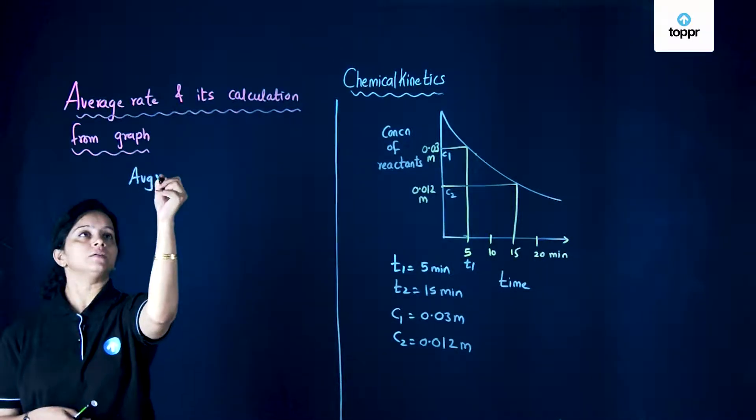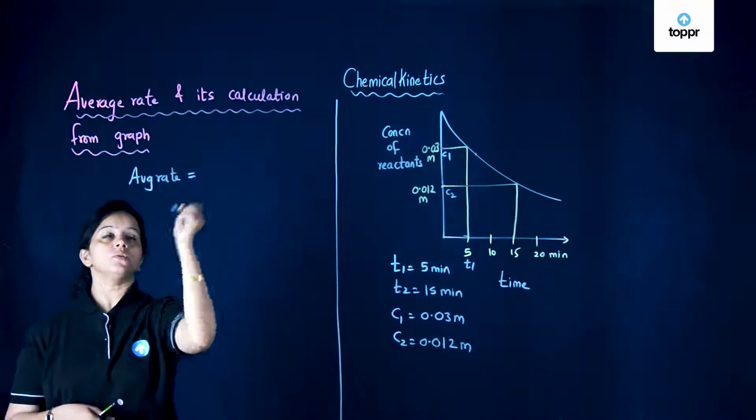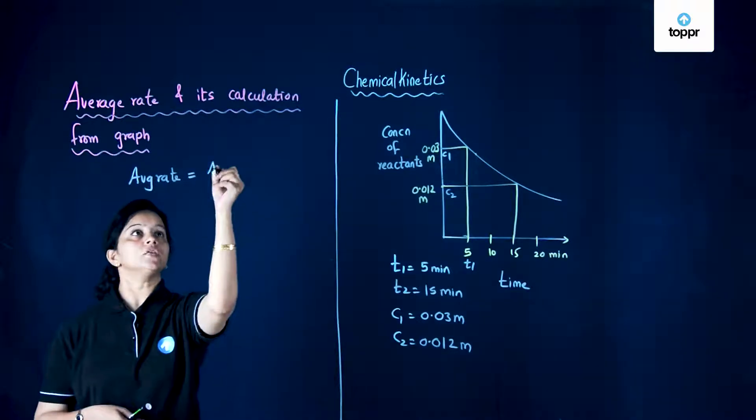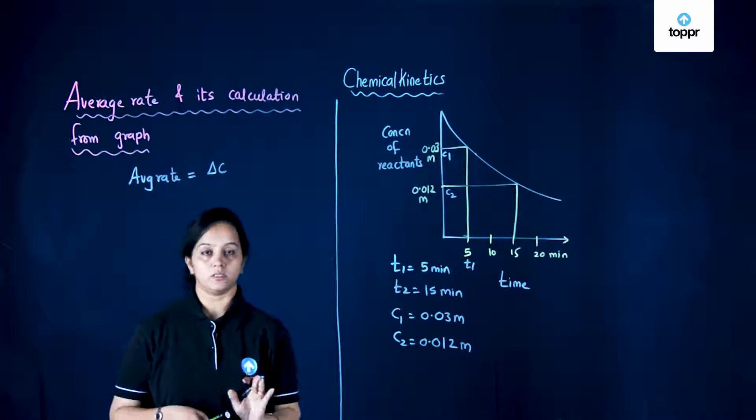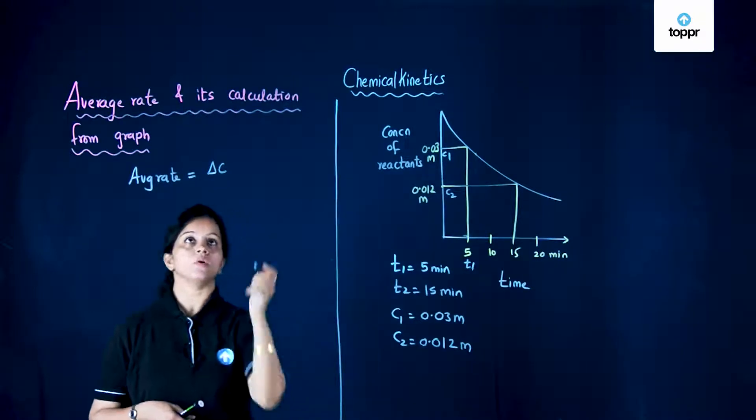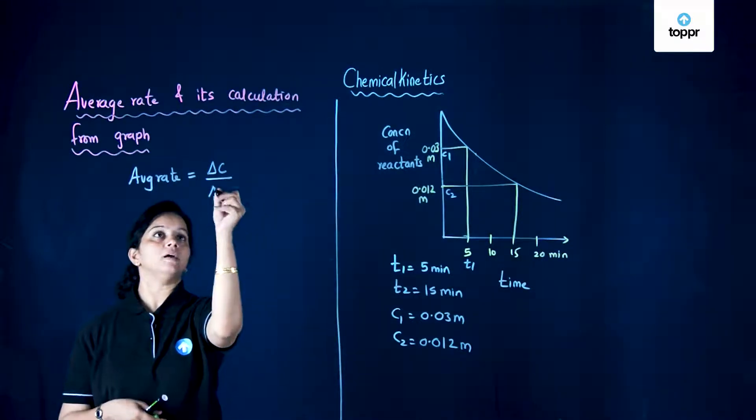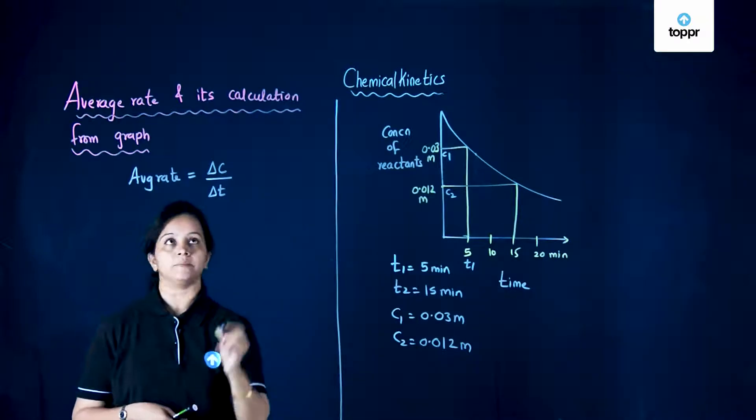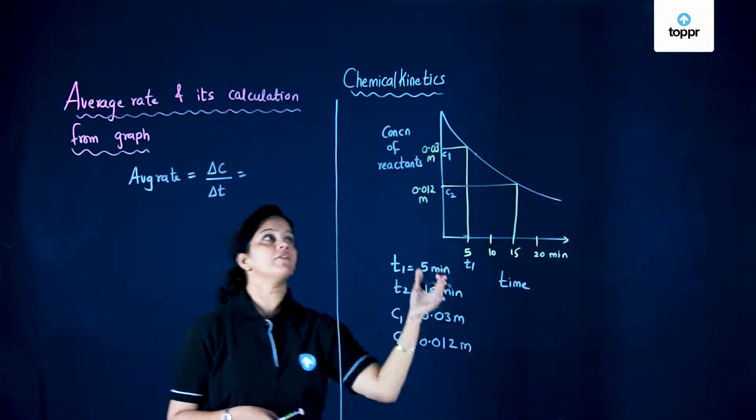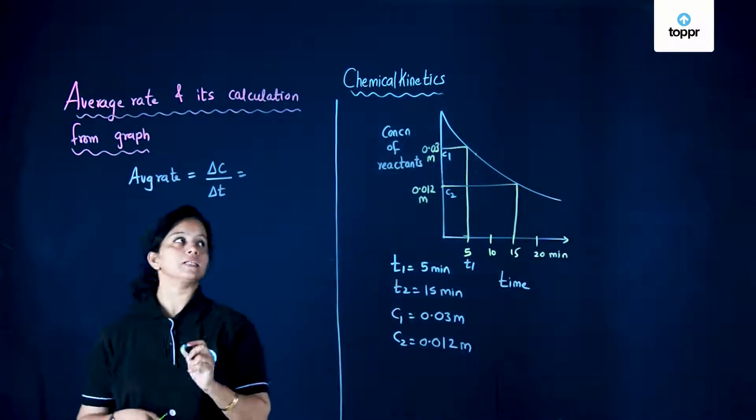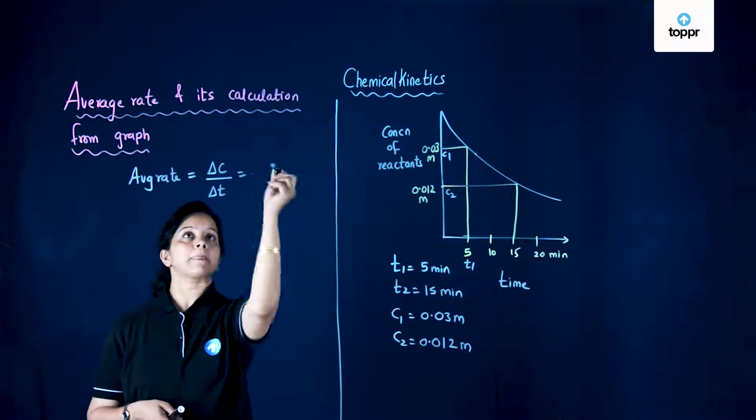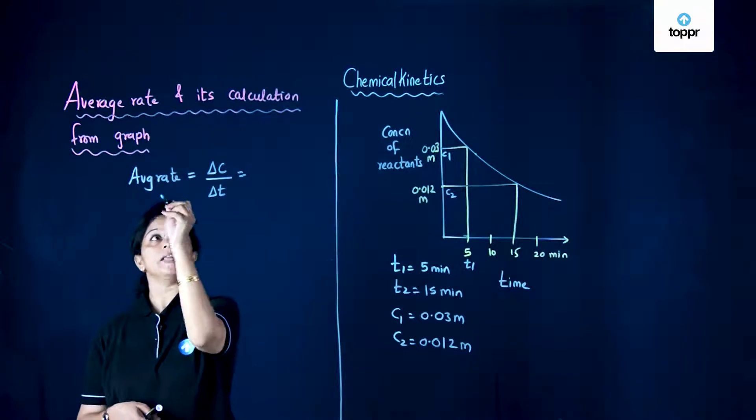What is average rate? Average rate is equal to change in the concentration of reactant or product upon time taken. So we write delta c upon delta t. Since we are taking average rate of reactants, we write minus, minus c2 minus c1 upon delta t.